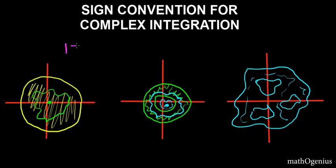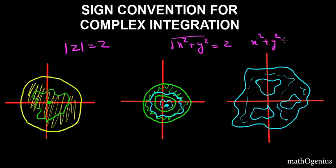Let's say these two curves are mod of z equal to 2. What do I mean by mod of z equal to 2? We know that mod of z is the square root of x squared plus y squared, equal to 2. That is x squared plus y squared equals 4. If you studied coordinate geometry, you understand what this is — this is the equation of a circle having radius 2. So mod of z equal to 2 represents a circle in the complex plane. This comes up a lot, so understand this carefully.